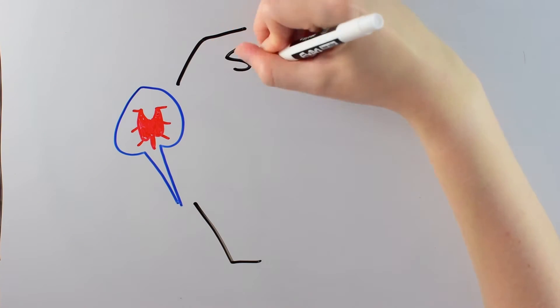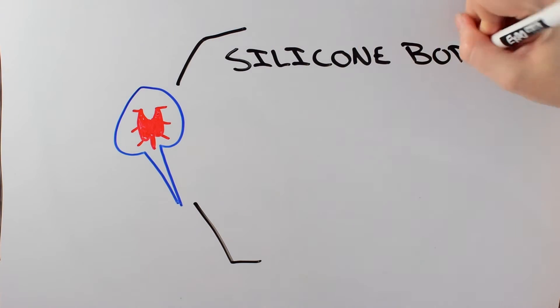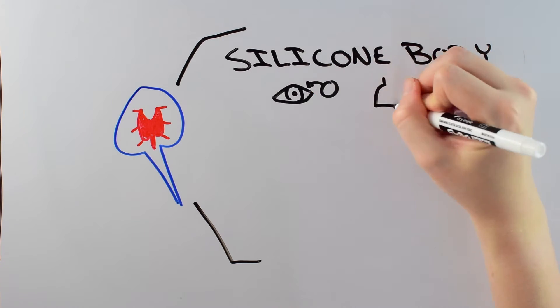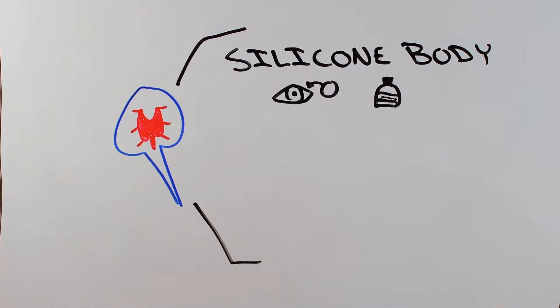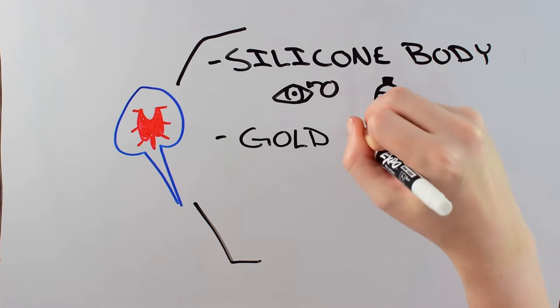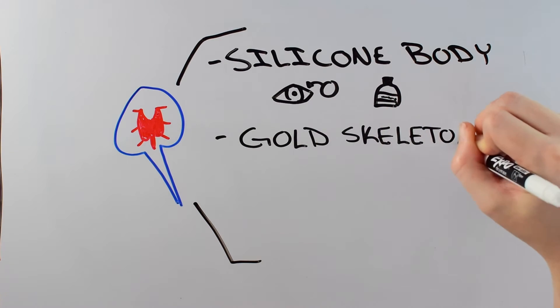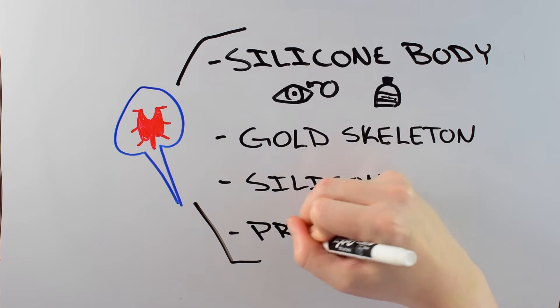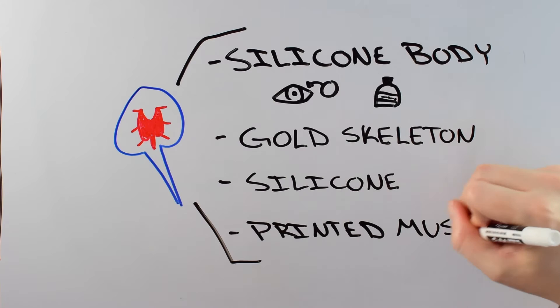The first thing needed for this robot is a body. And these researchers chose a type of silicone found in everything from contact lenses to shampoo, called dimethicone. Attached to the silicone body is a golden skeleton, chosen for its chemical inertness and for how light it is. Next is another small layer of silicone, and then finally the power of the whole stingray: a layer of printed muscle tissue.